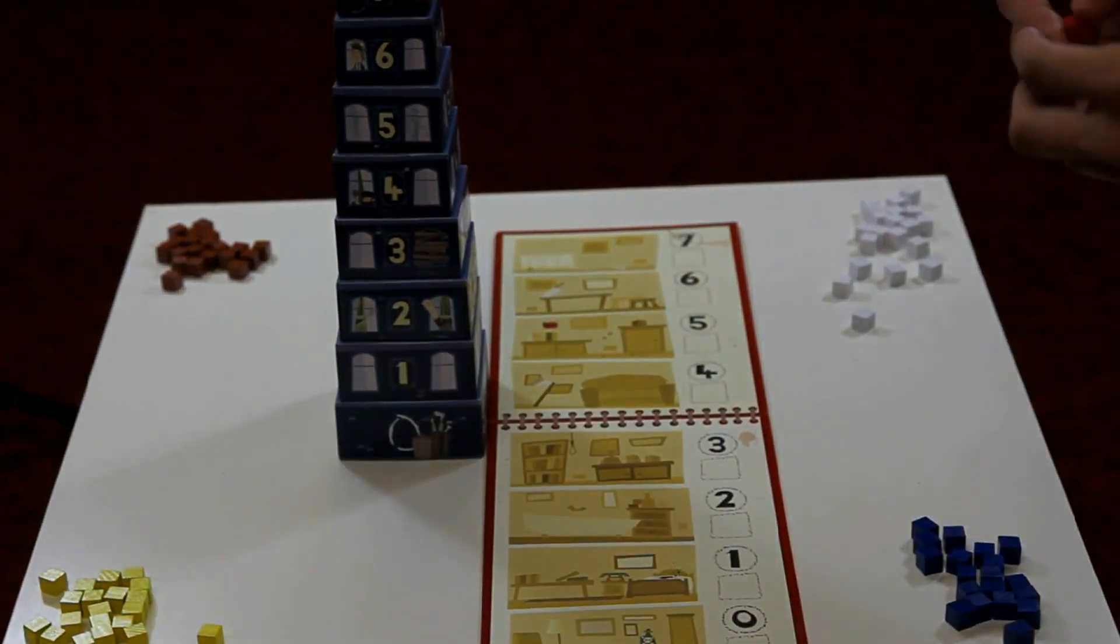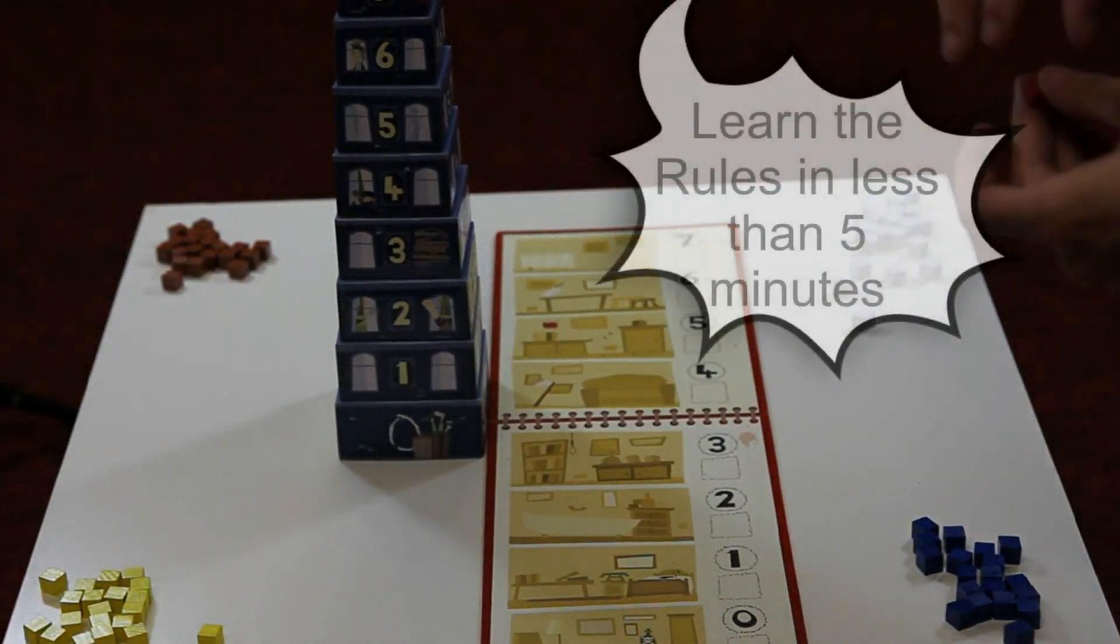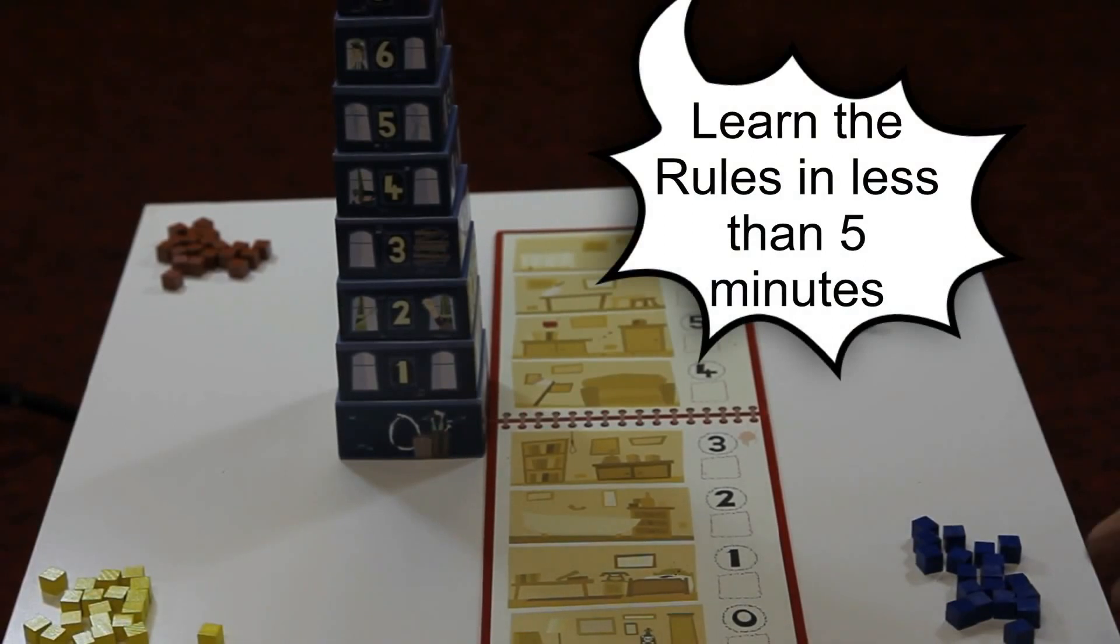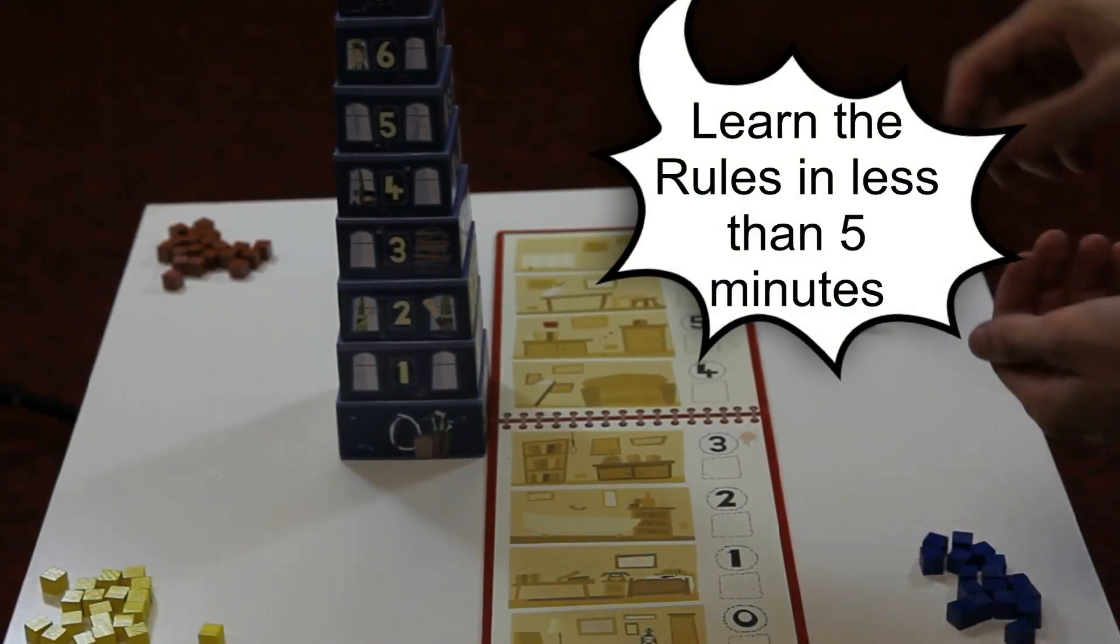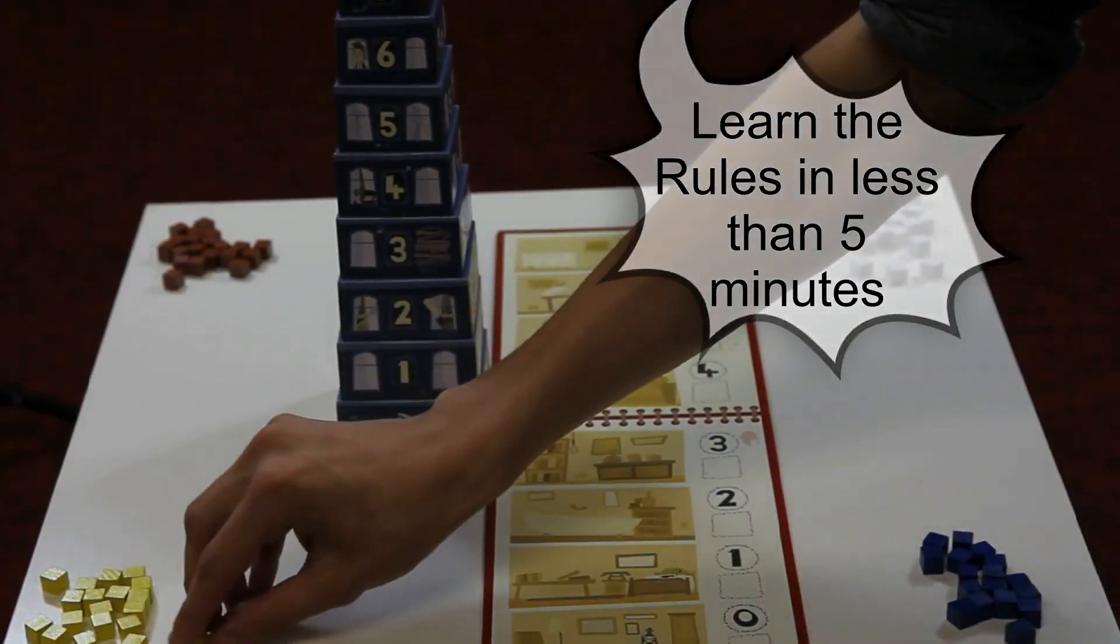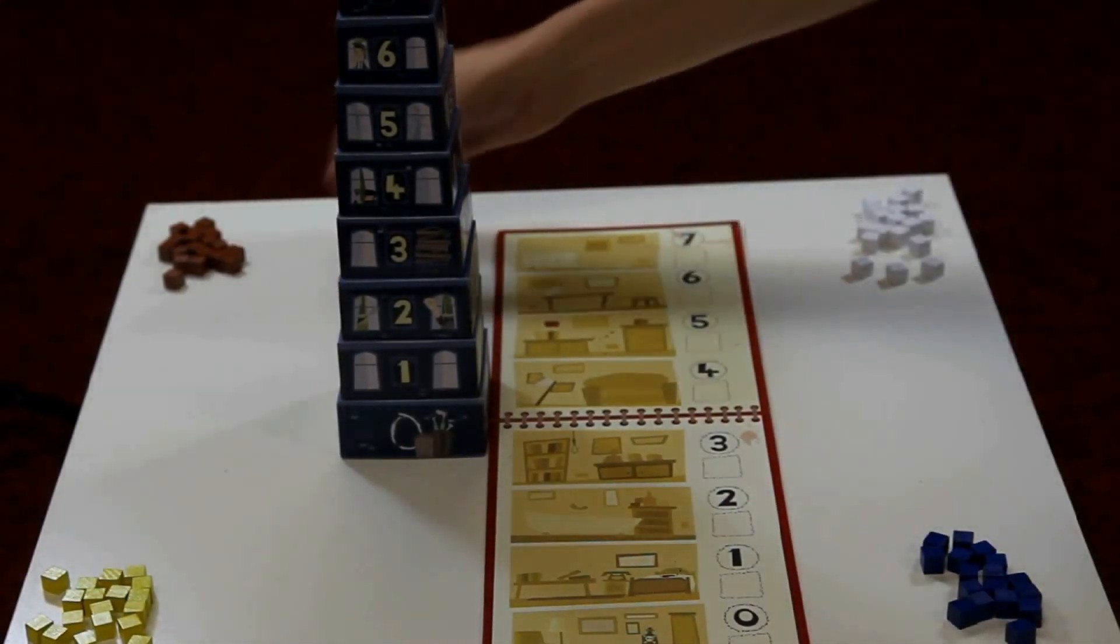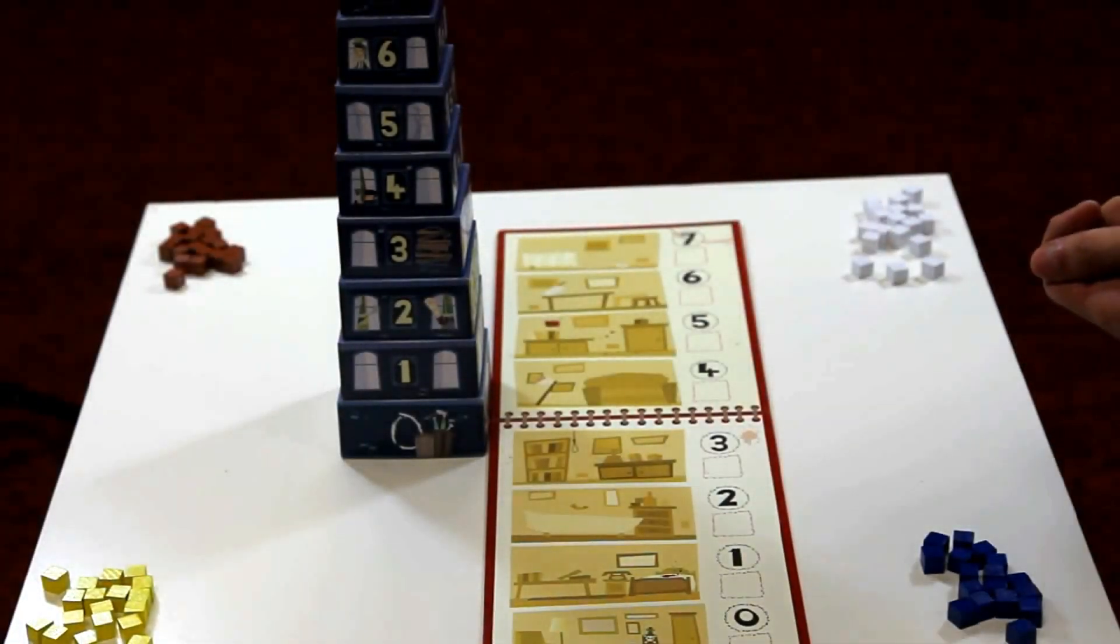We are now ready to drop in the murder victims' bodies, represented by the red cubes. Following the red cubes, every player must add two of their own cubes into the tower.